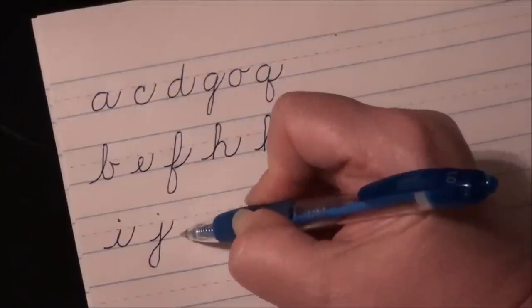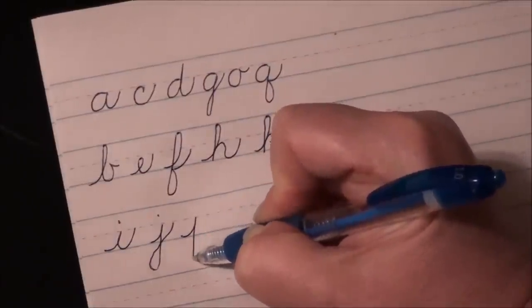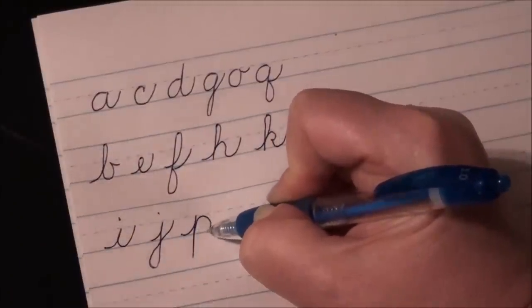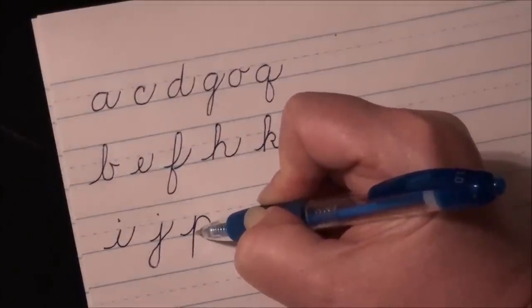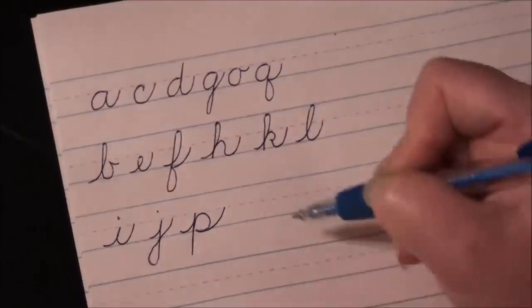P, upstroke to the midline, down past the baseline, retrace, make your circle to the right, your oval really technically, and touch, and retrace, and back up to your midline.